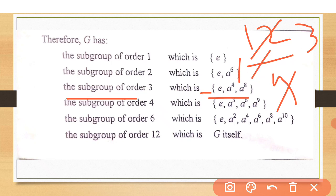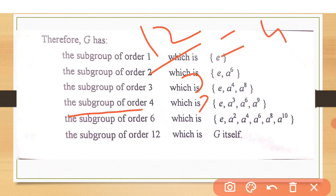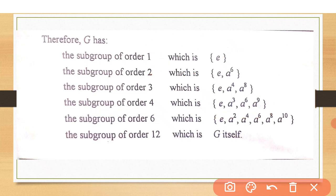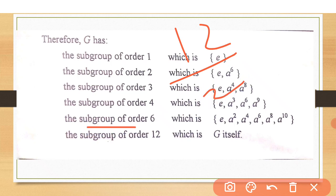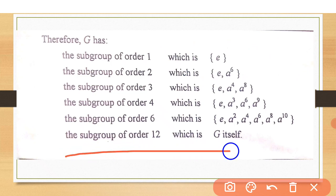A subgroup of order 4 comes from 12 divided by 3 equals 4, giving elements: identity, a³, a⁶, and a⁹. When we divide 12 by 2, it gives us 6 elements for the subgroup of order 6. And when we divide 12 by 1, it gives us all 12 elements, which is the whole group G itself.